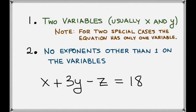Let's look at one more. Here we have x plus 3y minus z equals 18. What about the first condition? Well, we do have x and y, but we have an extra variable here, z. That's a third variable, and we're only supposed to have two variables for a line.